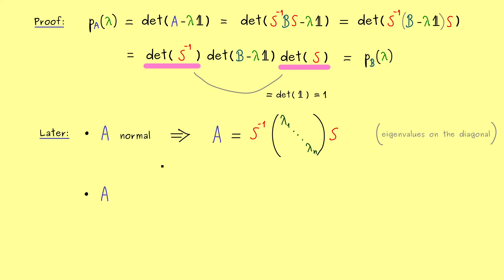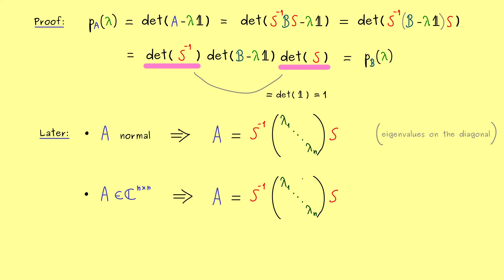However, the crucial thing is it will not hold for just any matrix A. For a general square matrix, we only have a weaker result. Namely, we can't guarantee a diagonal matrix, but still a triangular one. The result looks exactly the same, but with the difference that above the diagonal we still can find numbers that are non-zero. Still, this is very helpful, because we have the result that the eigenvalues are on the diagonal as well, and as before they are counted with the algebraic multiplicities.